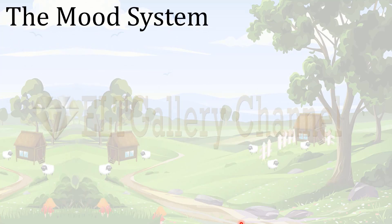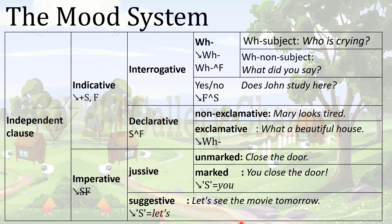Now let's look at the mood system in English. If we have an independent clause, it can be indicative or imperative. The indicative mood is marked with the presence of both subject and finite. If we have imperative — like 'open the door,' 'clean the floor,' 'give me your book' — we don't have a subject and we don't have a finite either. Just 'open,' 'clean,' or 'give.'